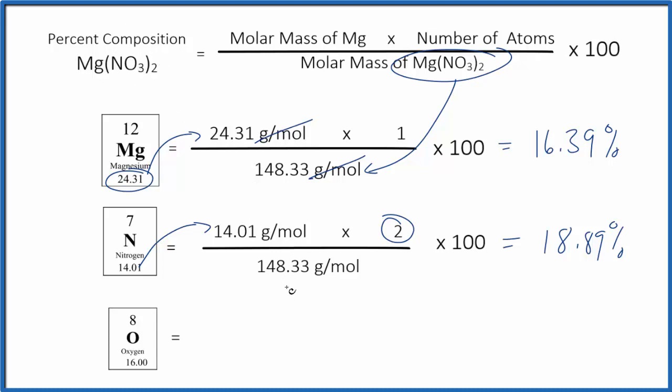Pause and figure out the percent composition by mass for the oxygen here in magnesium nitrate. And note we have 2 times 3 oxygen atoms. So 2 times 3, that gives us 6 total oxygen atoms, so we put that in here. When we do the math, we get 64.72%.